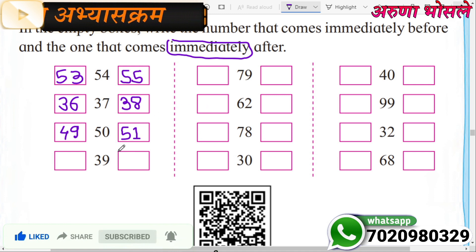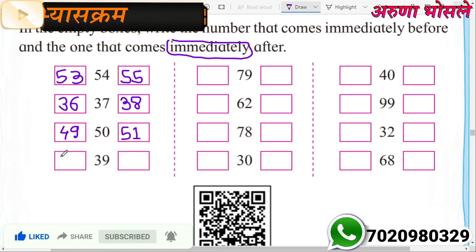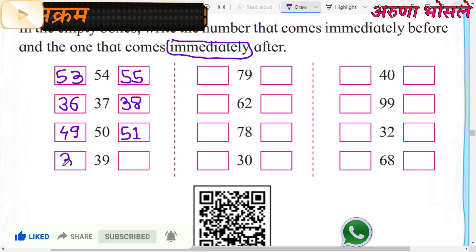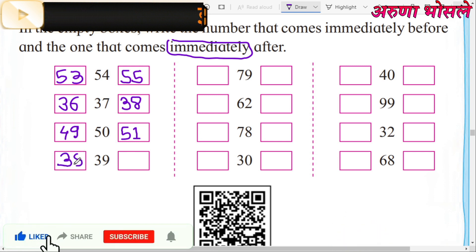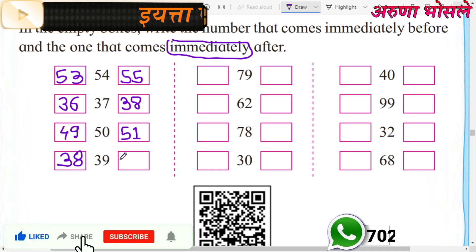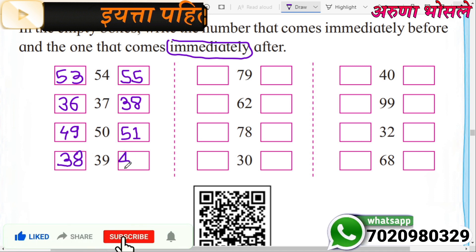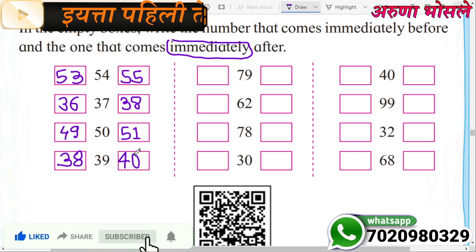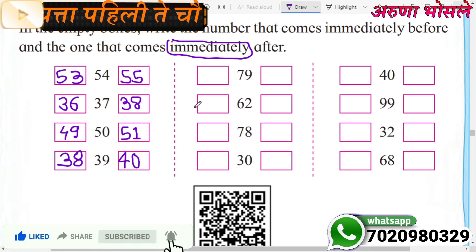Now next example: 39. Which number comes immediately before 39? 38. Very good. And which number comes immediately after 39? 40. Very good, students.